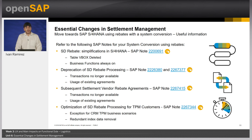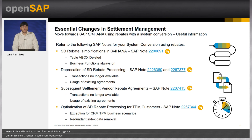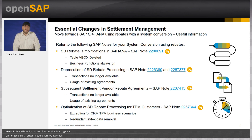Use the following SAP notes for your system conversion using rebates. Refer to SAP Note 2200691 to review the simplifications made in S/4HANA on SD rebates. With SAP S/4HANA, data is no longer written on the index table VBOX. Instead, the standard SAP programs run a dynamic access to the application tables to determine the relevant billing documents. Therefore, it is necessary to have relevant business functions always on and check your custom code to correct according to the simplification. SAP Notes 2226380 and 2267377 refer to the deprecation of SD rebate processing and its replacement by settlement management.